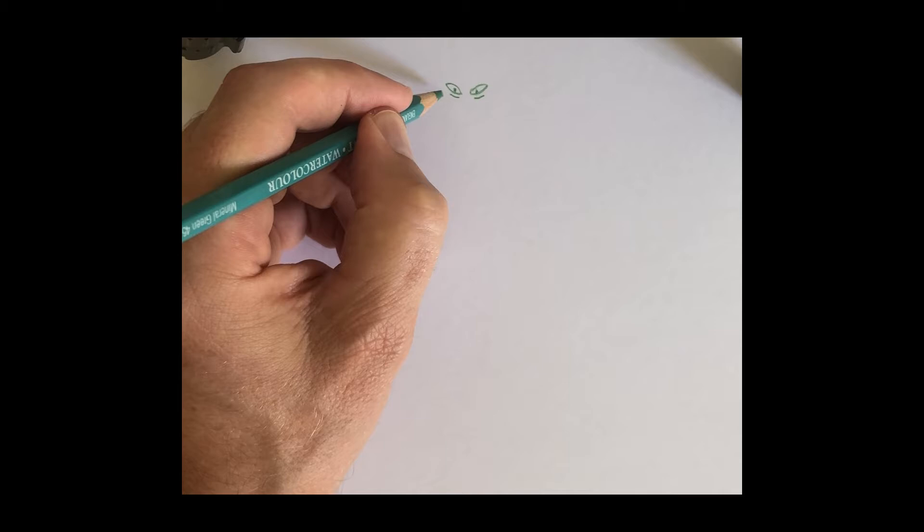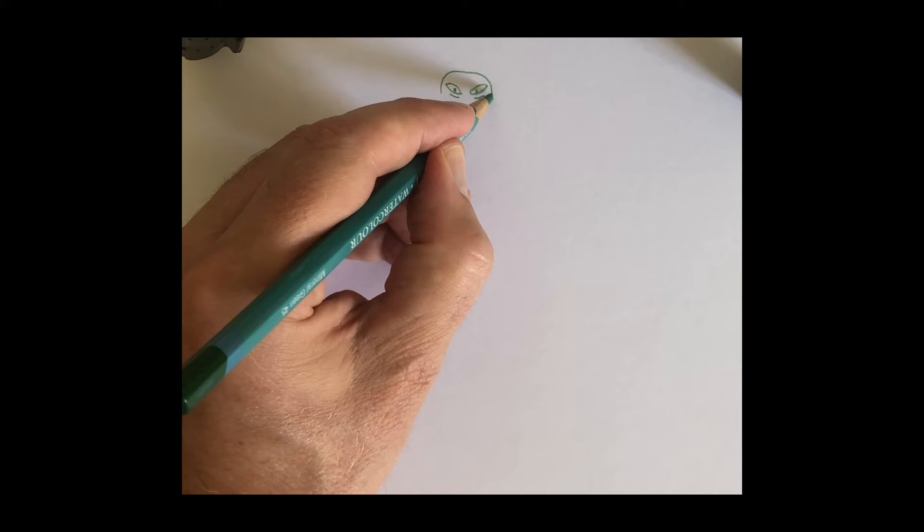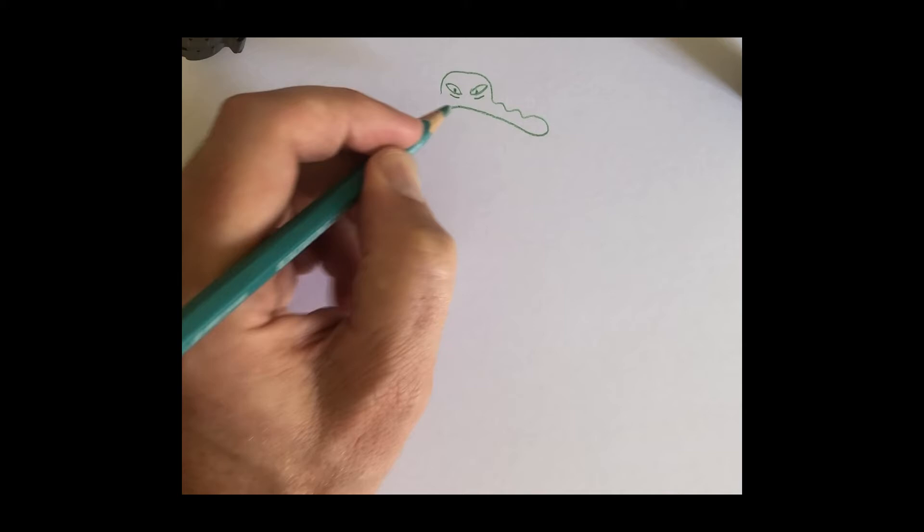I'm going to put two lines underneath there as well because he's always a bit grumpy, Daddy Croc. Top of his head is like that. Now the top of his snout is a wiggly line which I tend to count. One, two. The third one is round a bit more. You bring the line back up here and curve it round. That's like his mouth.